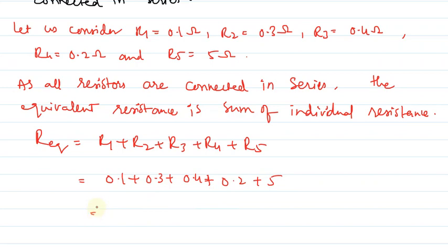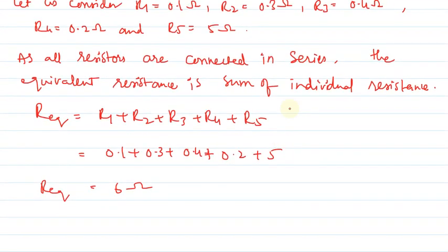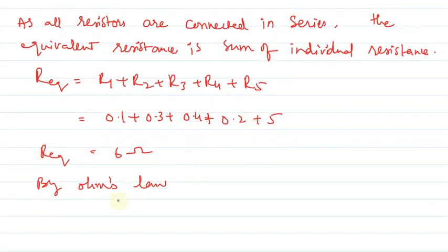This equals 6 ohms, which is the equivalent resistance when resistors are connected in series. Now let us use Ohm's law. By Ohm's law, V equals I times R.